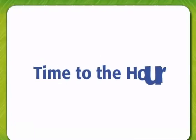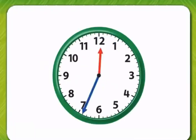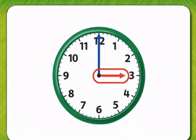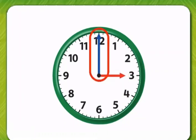Time to the hour. The clock has the numbers 1 to 12. The hour hand is shorter — it points to the hour. The minute hand is longer — it points to the minutes.